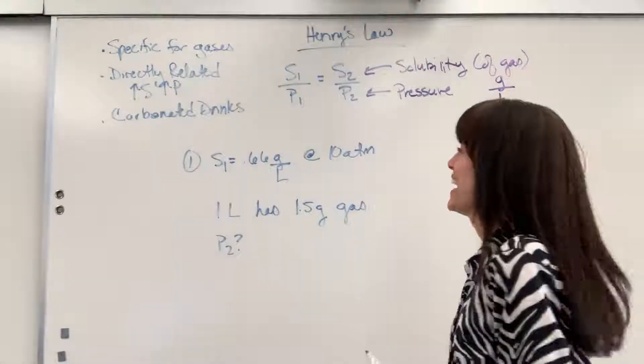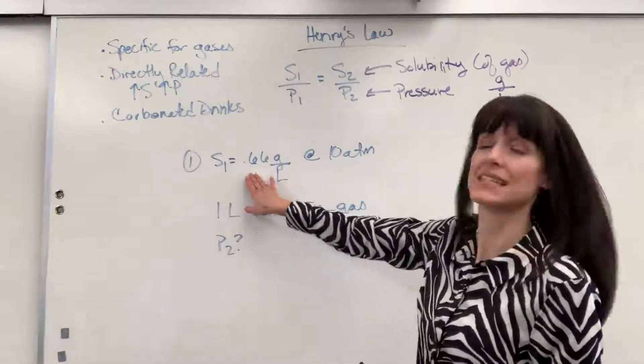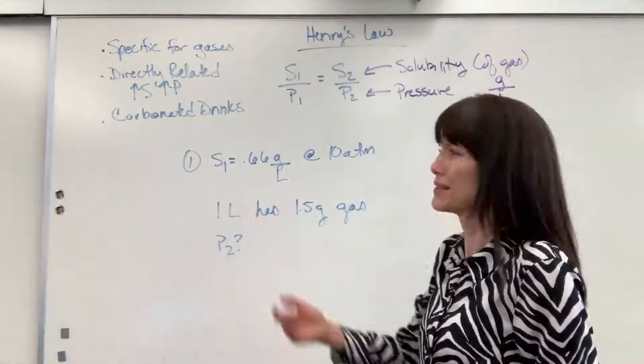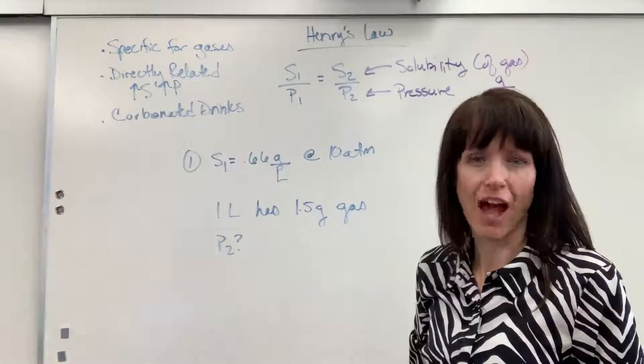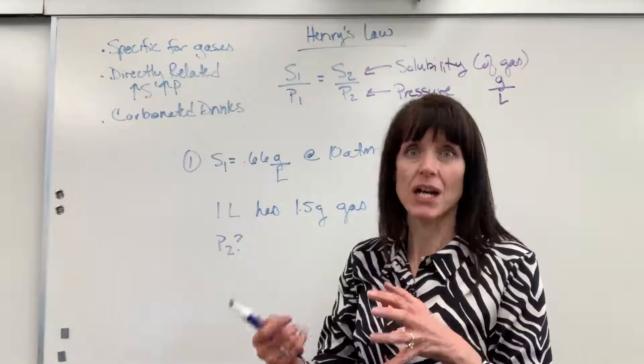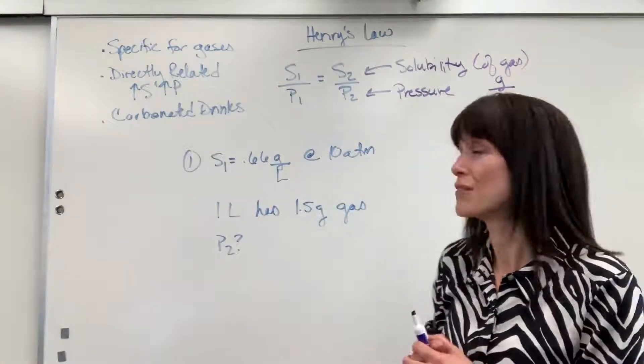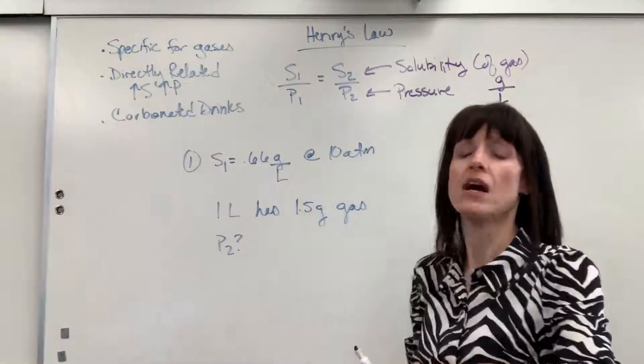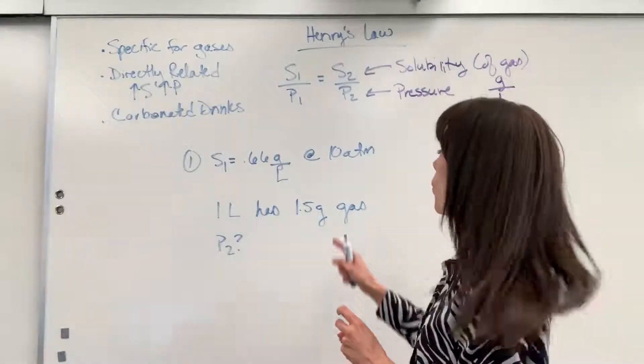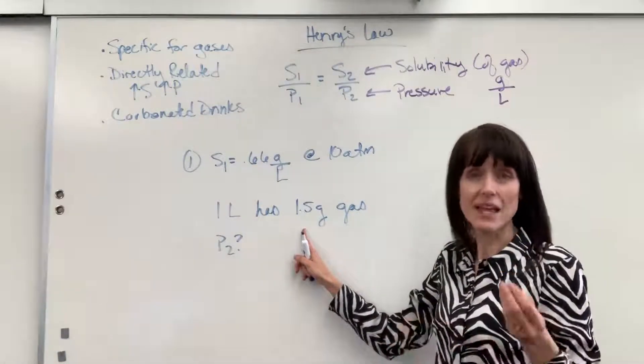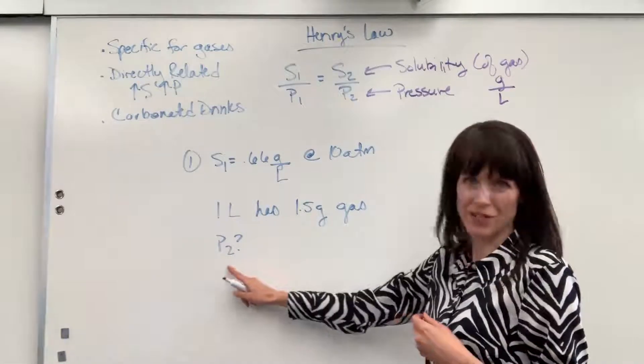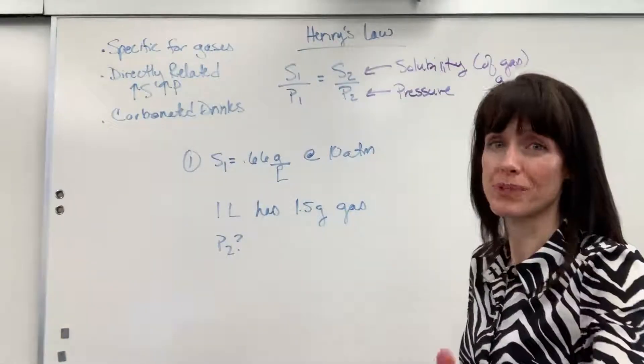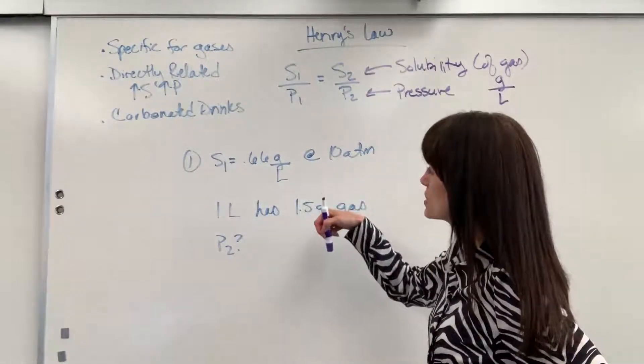Let's say that we have some unknown gas and its solubility is 0.66 grams per liter. So that really doesn't sound like a lot. You have a whole liter container and only 0.66 grams of gas has been dissolved into it. Well, the question is, what if you have a one liter container and you want to dissolve 1.6 grams of that same unknown gas? What does the pressure have to be? Now, I want you to predict.